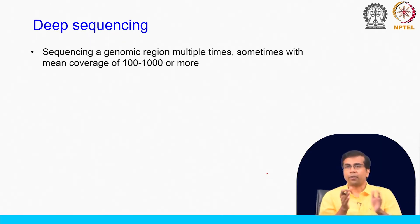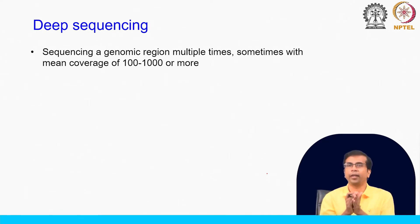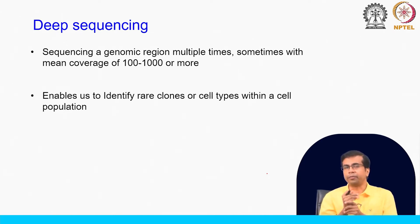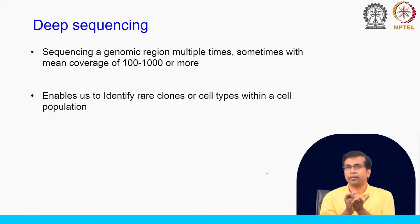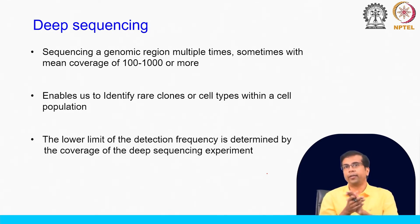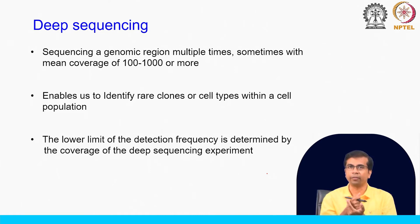There is a term called deep sequencing related to coverage. This refers to sequencing a genome or region multiple times, where mean coverage would be 100 to 1000 or even more. Deep sequencing is used to identify rare clones or cell types within a cell population — for example, a cell type present in only 1 percent of the population might require 1000x coverage or more. The lower limit of detection frequency is determined by the coverage of the deep sequencing experiment.